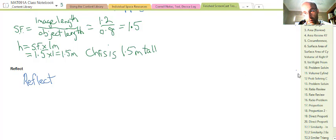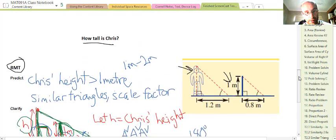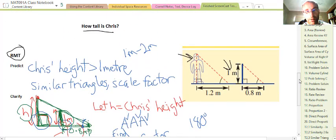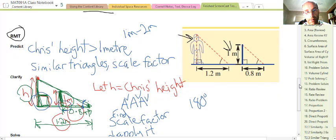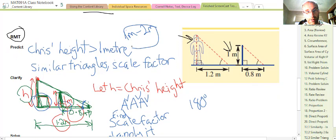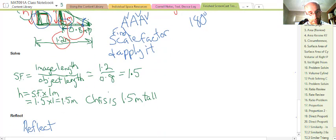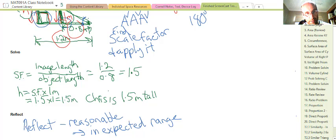Quick reflection. Does that seem reasonable? It's a bit like closing the circle, because when we predicted, we predicted that it should be between 1 and 2 meters, and 1.5 is between the two, quite in the middle in fact. It is in that expected range, so basically it's a reasonable answer. You can see how predict opens the circle, we go through clarify and solve, and then reflect. We check if our answer is reasonable and we've closed the problem solving circle.